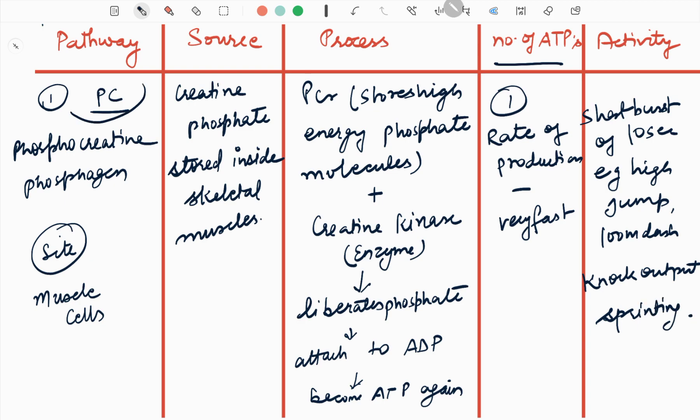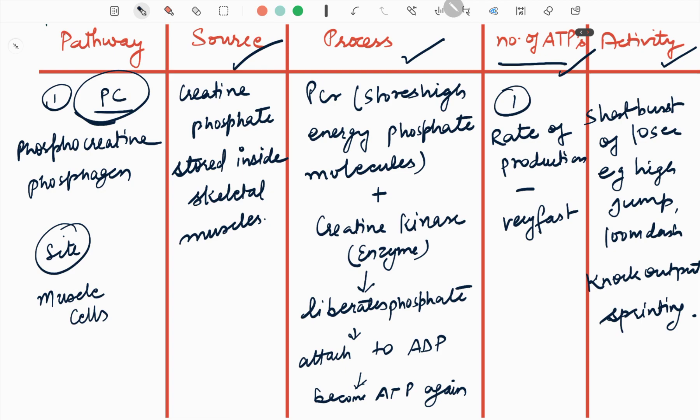So for pathway PC, the source is here, process in short form, number of ATPs and activities. Now the turn is for anaerobic glycolysis.